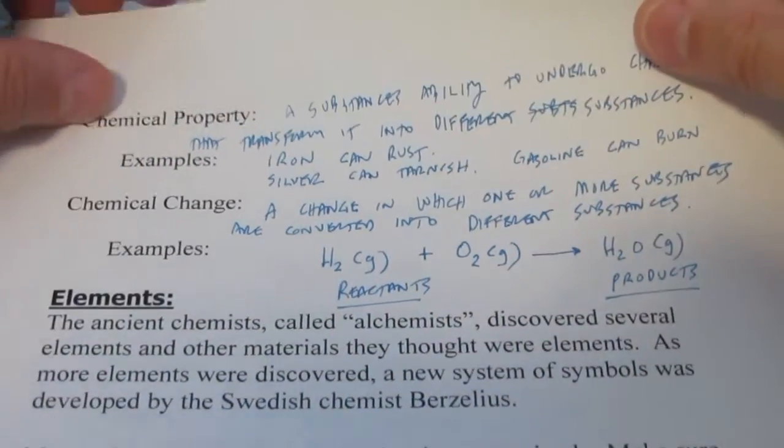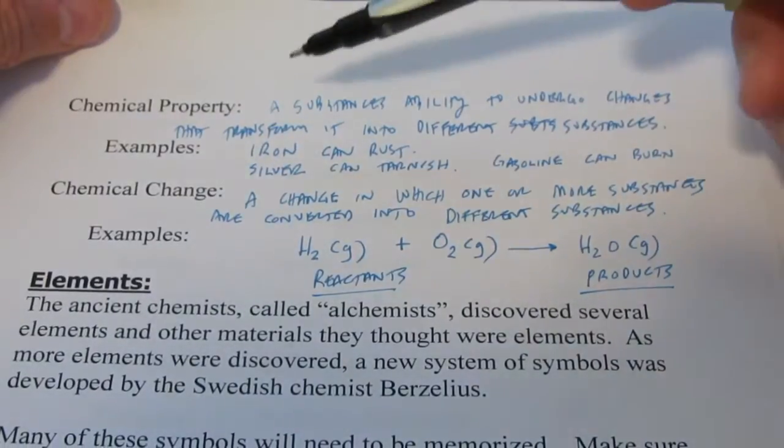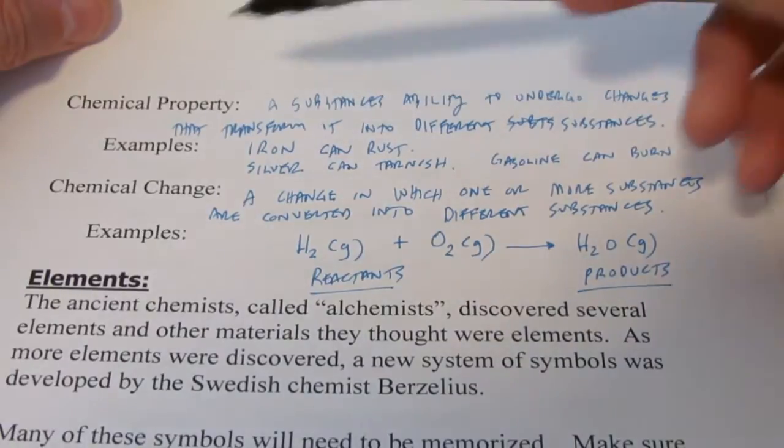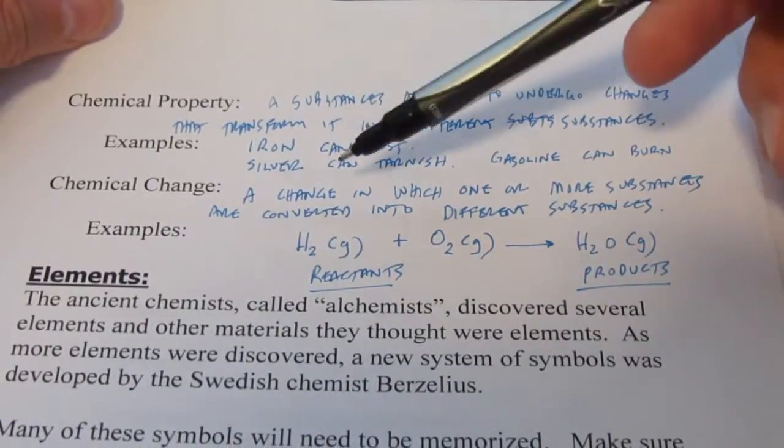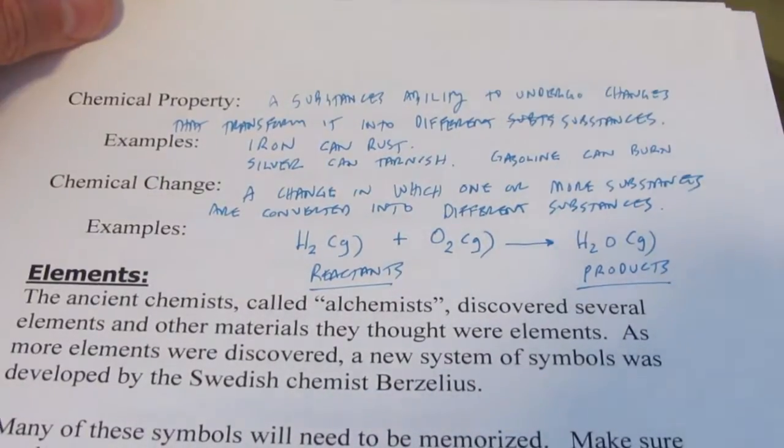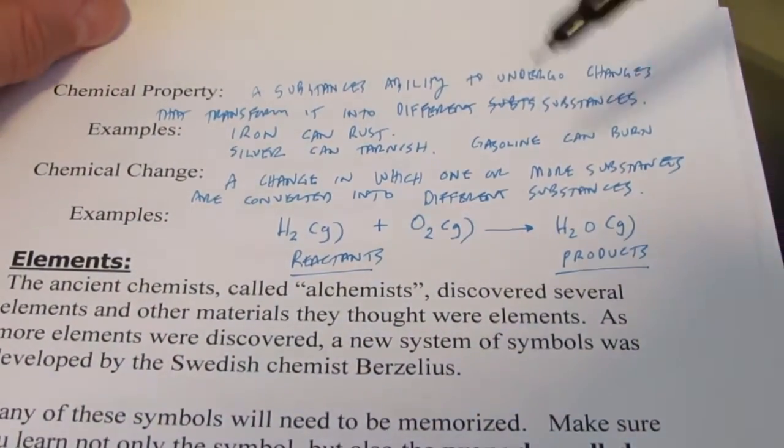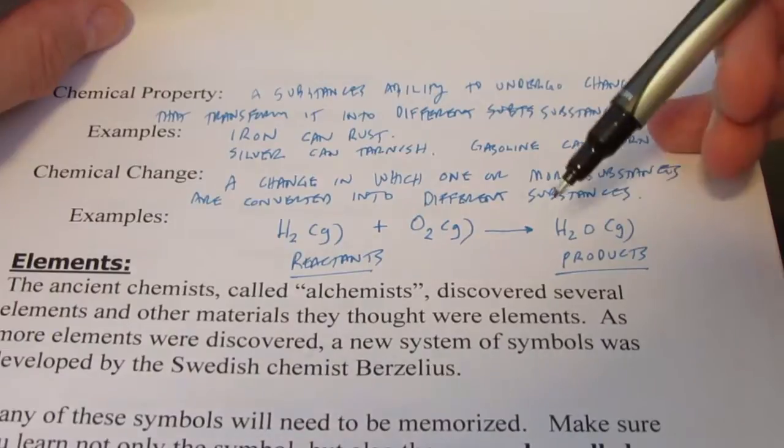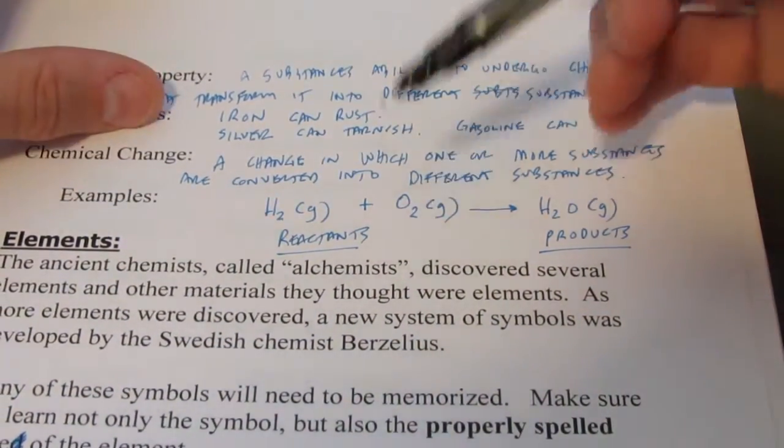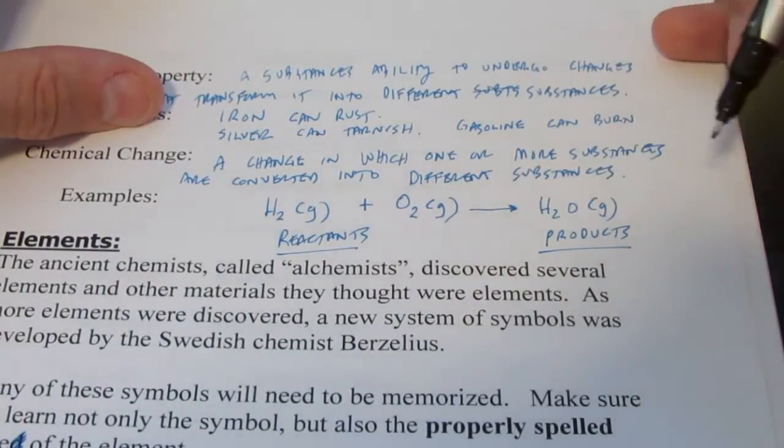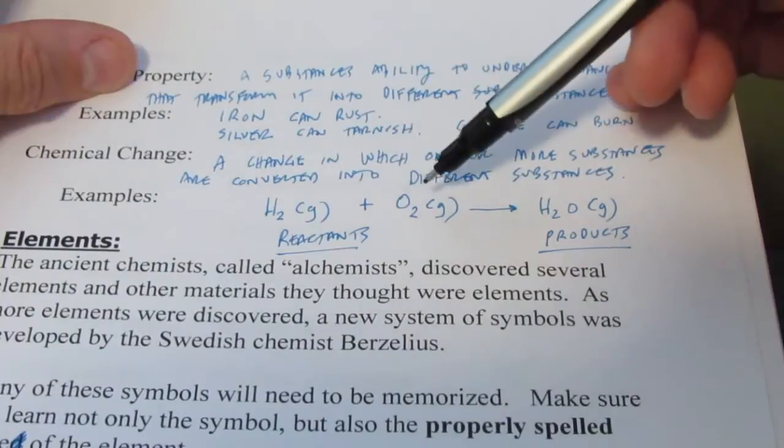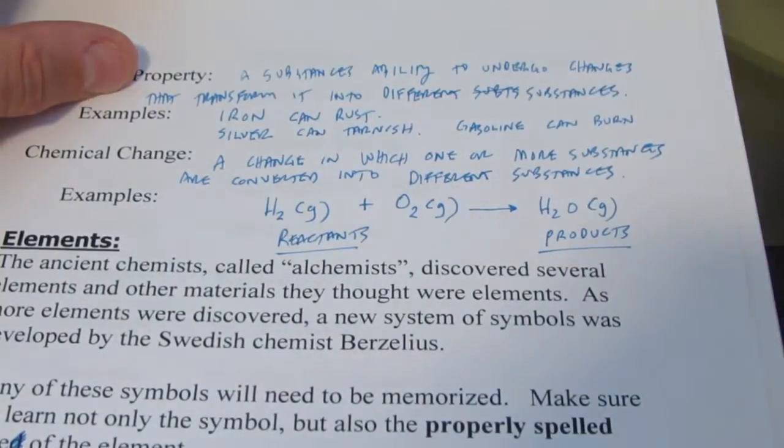Chemical properties. Now we have a substance's ability to undergo changes that transform it into a different substance. So iron can rust. It's a chemical property of iron. And the change of iron turning into rust is a chemical change once again because chemically we have something different after the process than we did before. So here I have hydrogen and oxygen gas. They react. It's a combustion reaction to form water. Water, chemically, is not the same as hydrogen and oxygen. So that would be a chemical change.